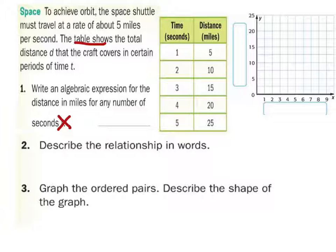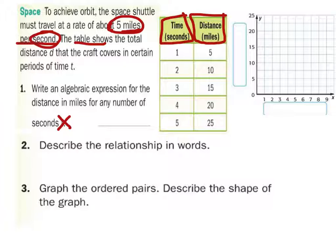We need to know about independent and dependent variables here. We have time and we have distance. Which of these depends on the other? That is correct. The distance you go will depend on how many seconds have passed because it says 5 miles per second. It's always the dependent per independent. Whenever you see the word per, it's per independent variable. Additionally, time is always independent. So independent is x, dependent is y.